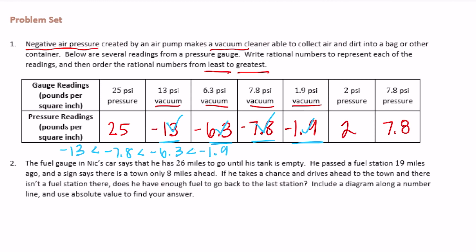Then we have 25, two, and seven and eight-tenths. So the smallest of the positives is two, then seven and eight-tenths, and lastly, 25 is the largest.